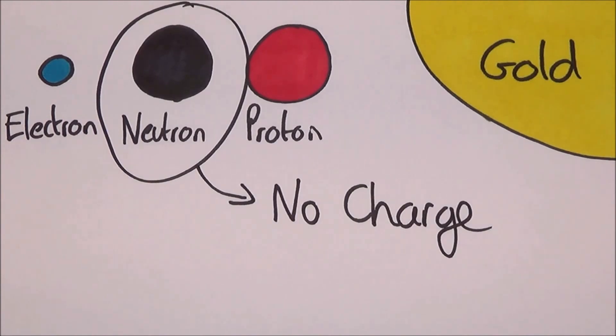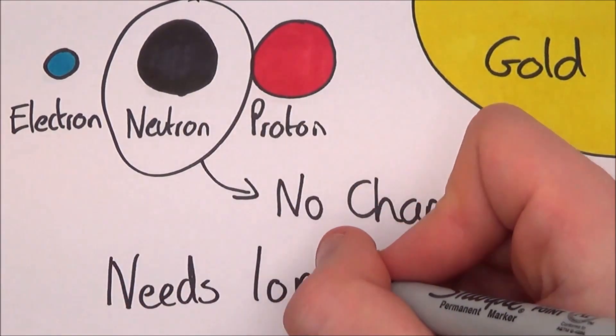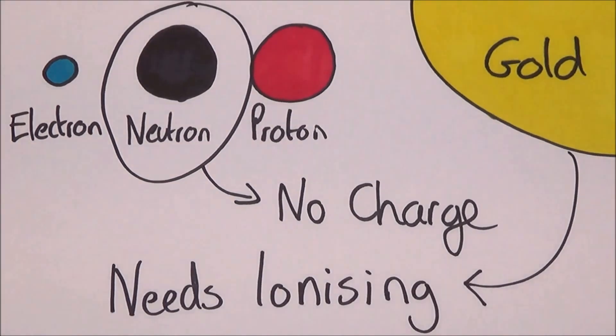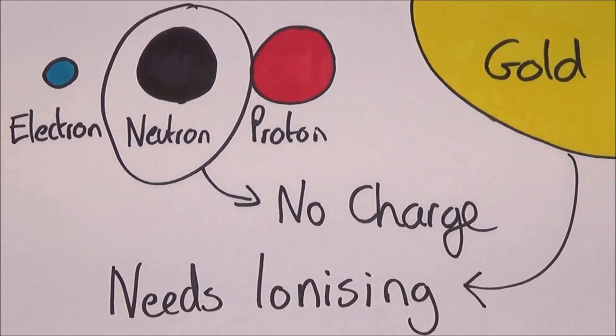The other one, the gold atom, can but it needs to be changed first. We need to ionize it so it has charge. Whether that be add electrons or rip them off, it doesn't really matter.